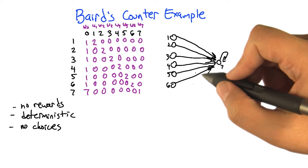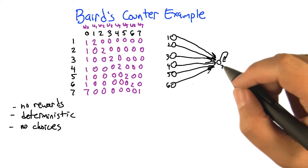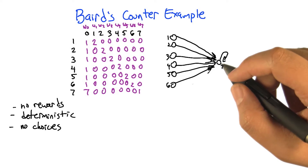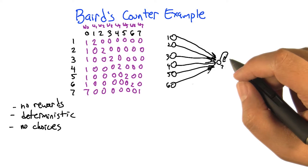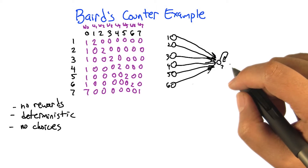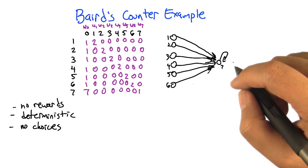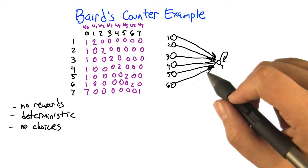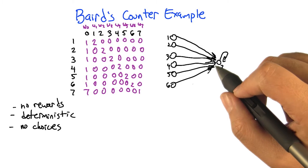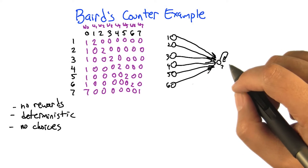So what is the optimal value function and policy for this example? The optimal value function or the optimal policy? I ask for both. There is no optimal policy — it doesn't matter what you do. You just have to do the one thing. There's only one policy, and it is optimal by definition. And the value function would be zero everywhere, because there's no rewards anywhere.